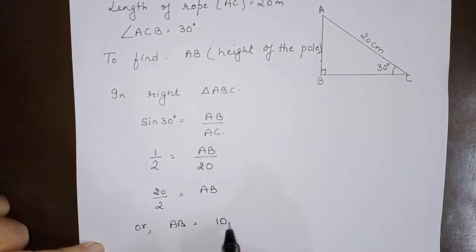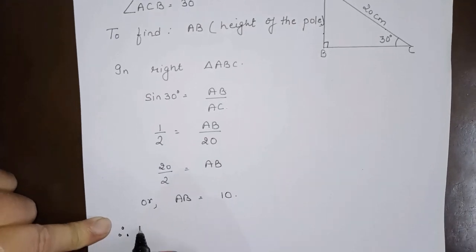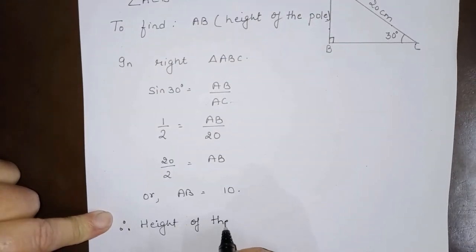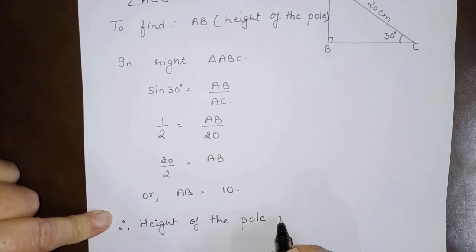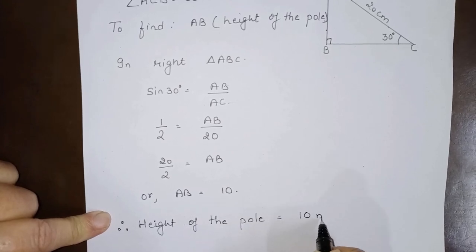Therefore, height of the pole equals 10 meters.